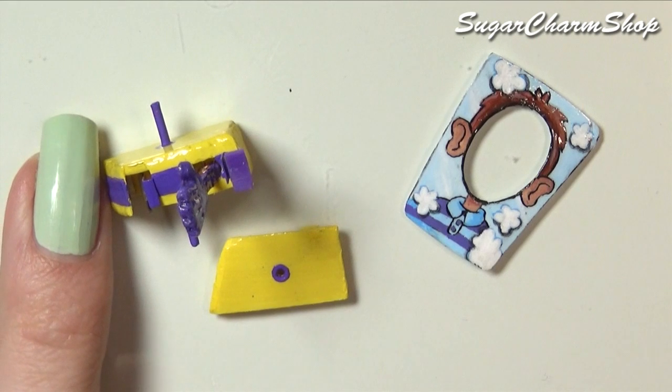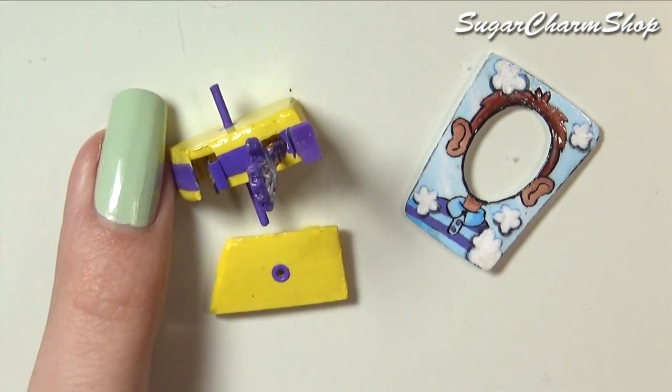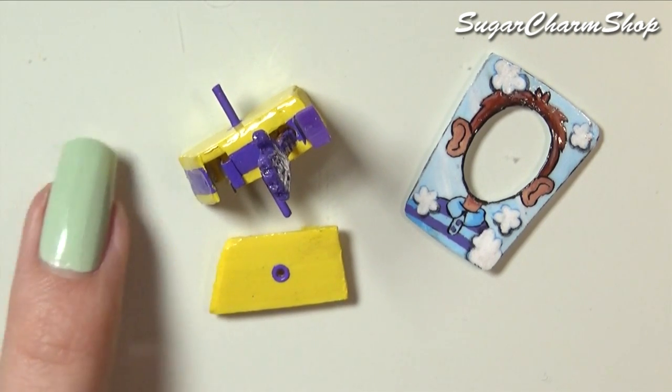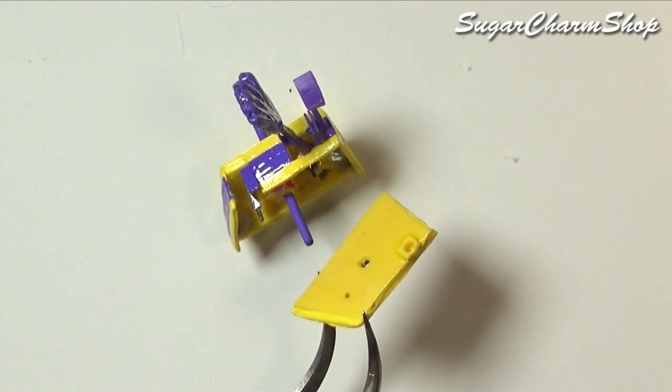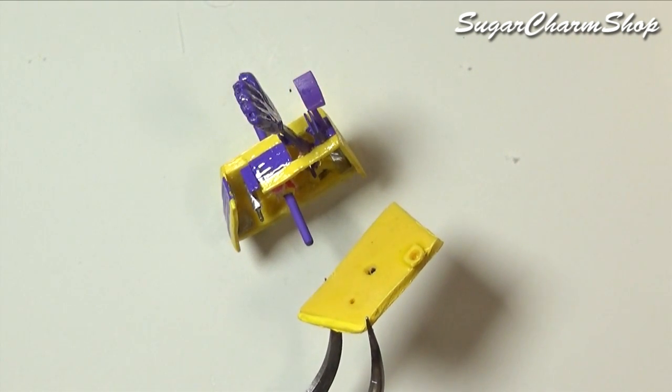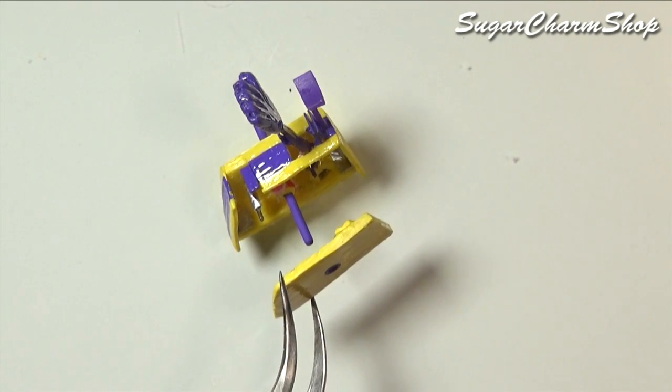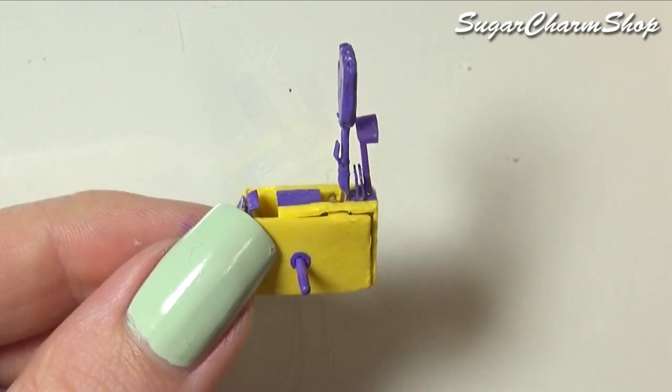And once you have all the pieces, you want to attach the second side piece. If you want to close up the gap completely and make it look more neat, you can definitely glue it in place. I chose not to glue it, just in case I needed to repair something on the inside, so the side could easily come off.